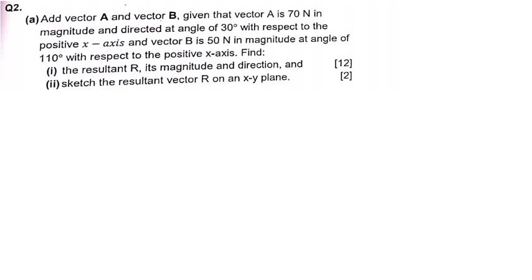Let us talk about vectors. I'm going to explain everything you need to know about vectors using this question. The question is: add vector A and vector B, given that vector A is 70 N in magnitude and directed at an angle of 30 degrees with respect to the positive x-axis, and vector B is 50 N in magnitude at an angle of 110 degrees with respect to the positive x-axis.